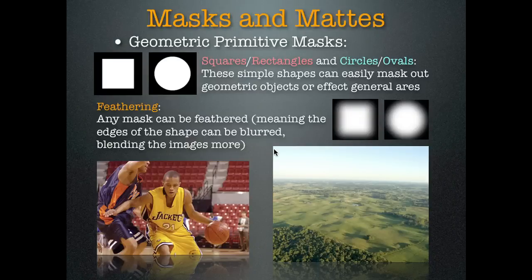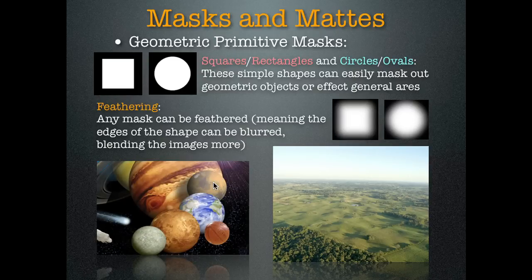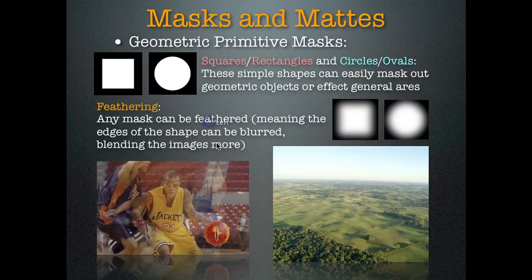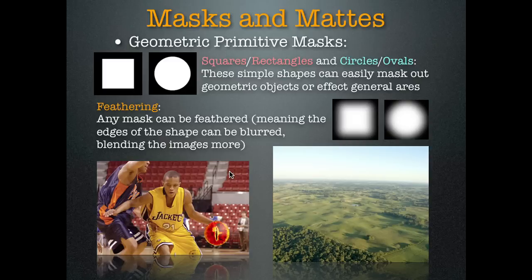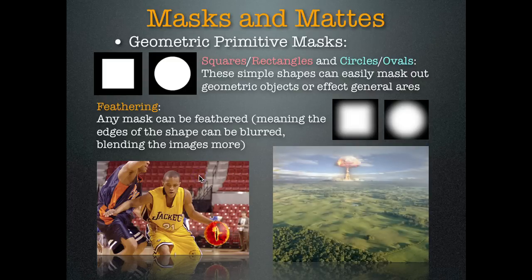Masks and mattes — this is one way you can add an alpha channel really quickly and simply, just by using basic shapes. Here we have a square and a circle, so we can take a basketball and use that map. Notice again the black and the white — this all refers back to the alpha channel. We can put the ball in space, or we can put the ISS on instead of the basketball. Feathering masks is a very important part of any operation — even something simple like that basketball, I'd feather it just one point, because feathering just looks a lot better. Here we can add a nice explosion to a scenic landscape — if we had a hard edge it wouldn't look as realistic.